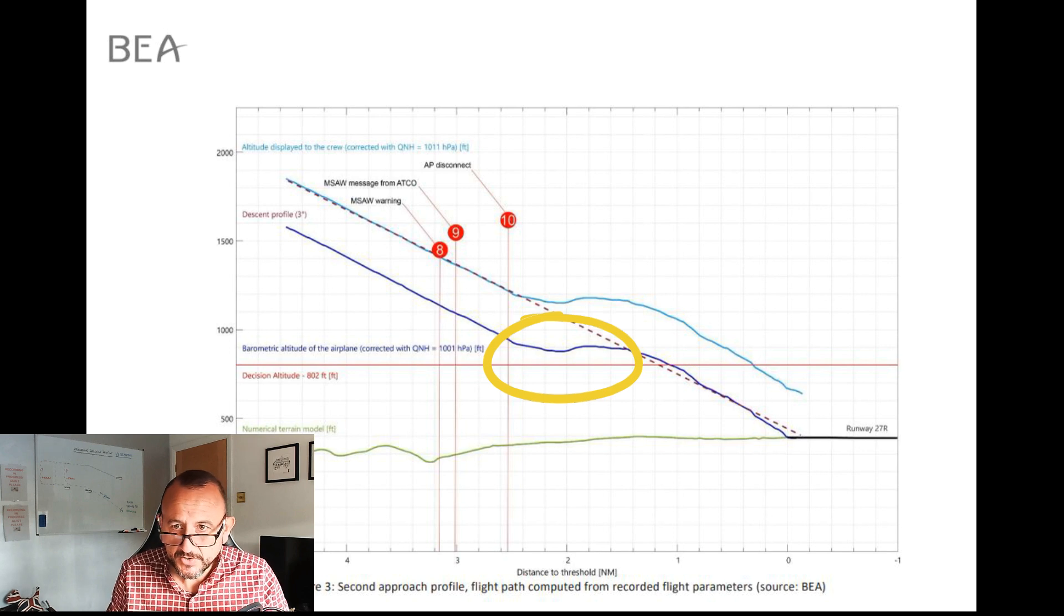The next slide I'm going to show you here is an extract from the AIP and it shows the RNP approach with the LNAV/VNAV minima and the profile. What I've done for you here is just sort of explained to you a little bit more pictorially what the aircraft actually did based on what it was supposed to be doing.